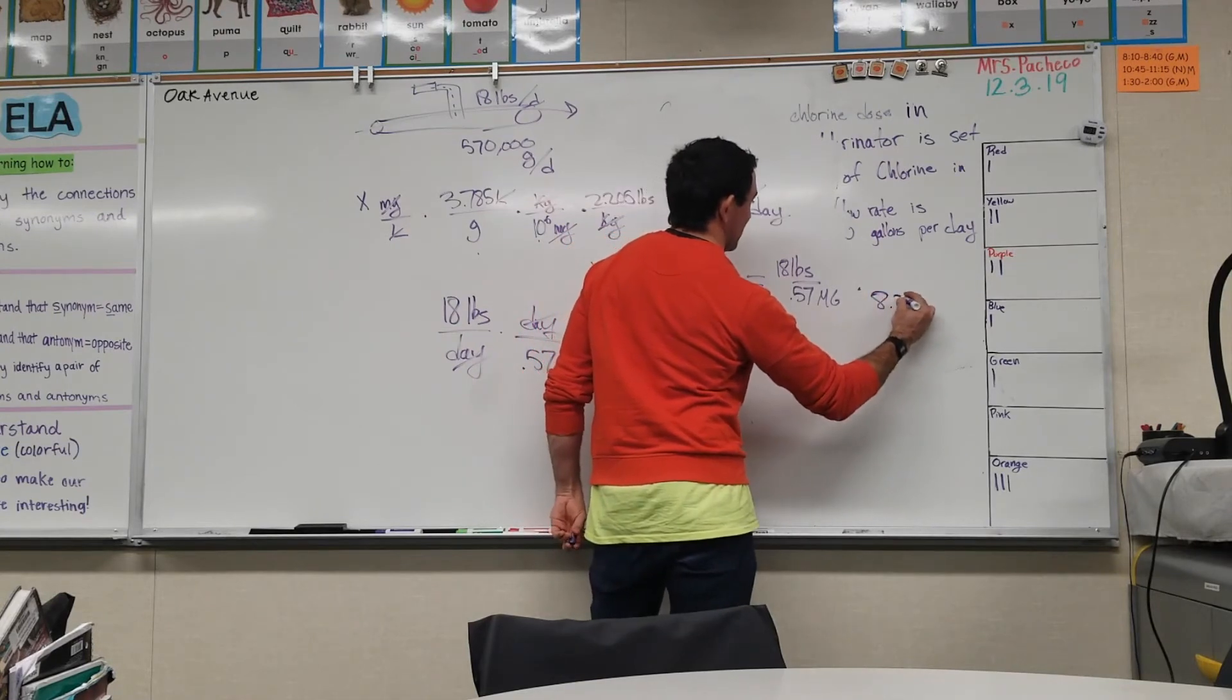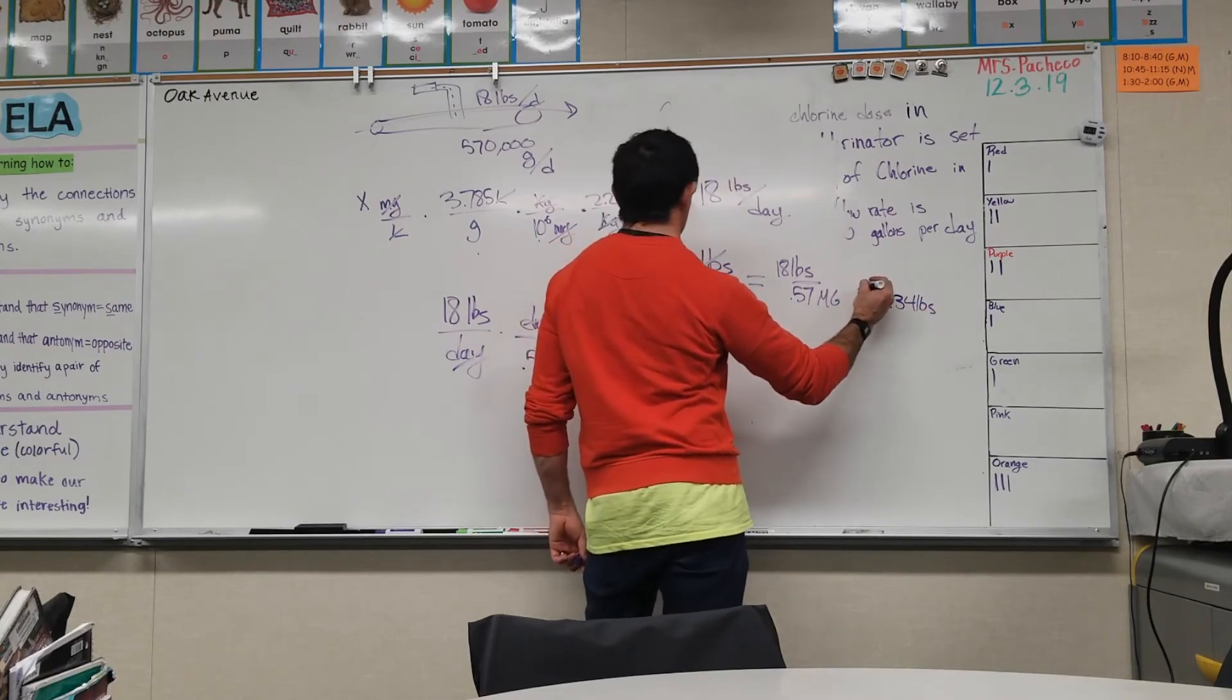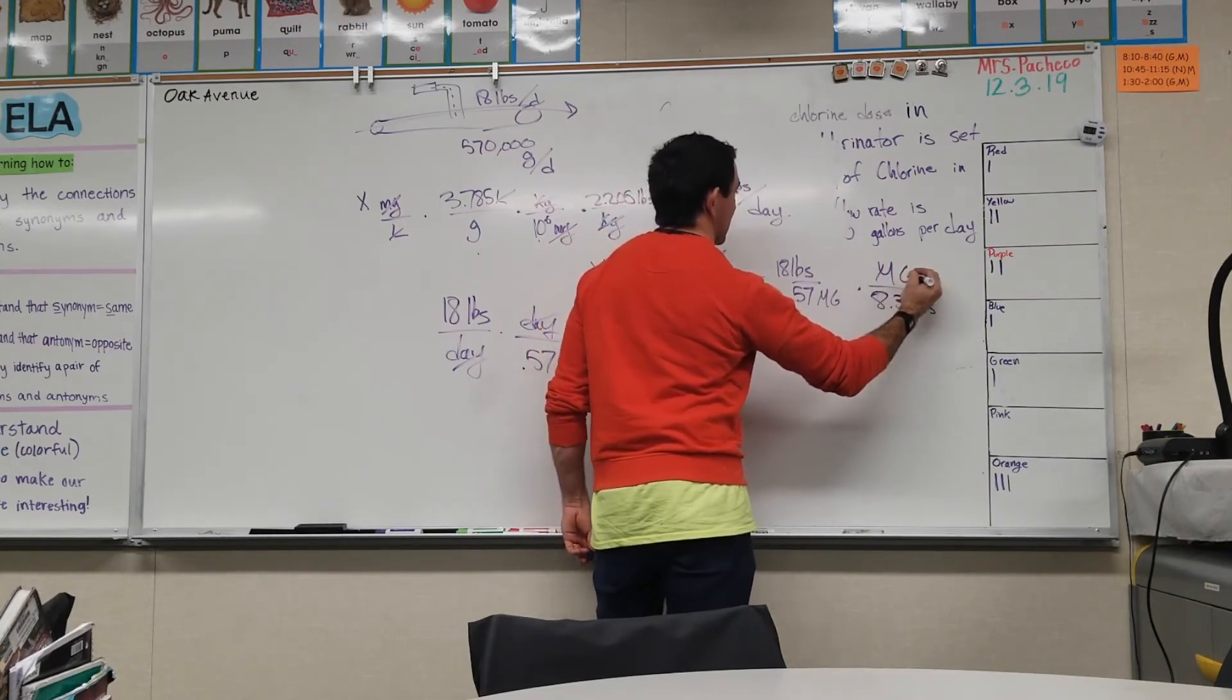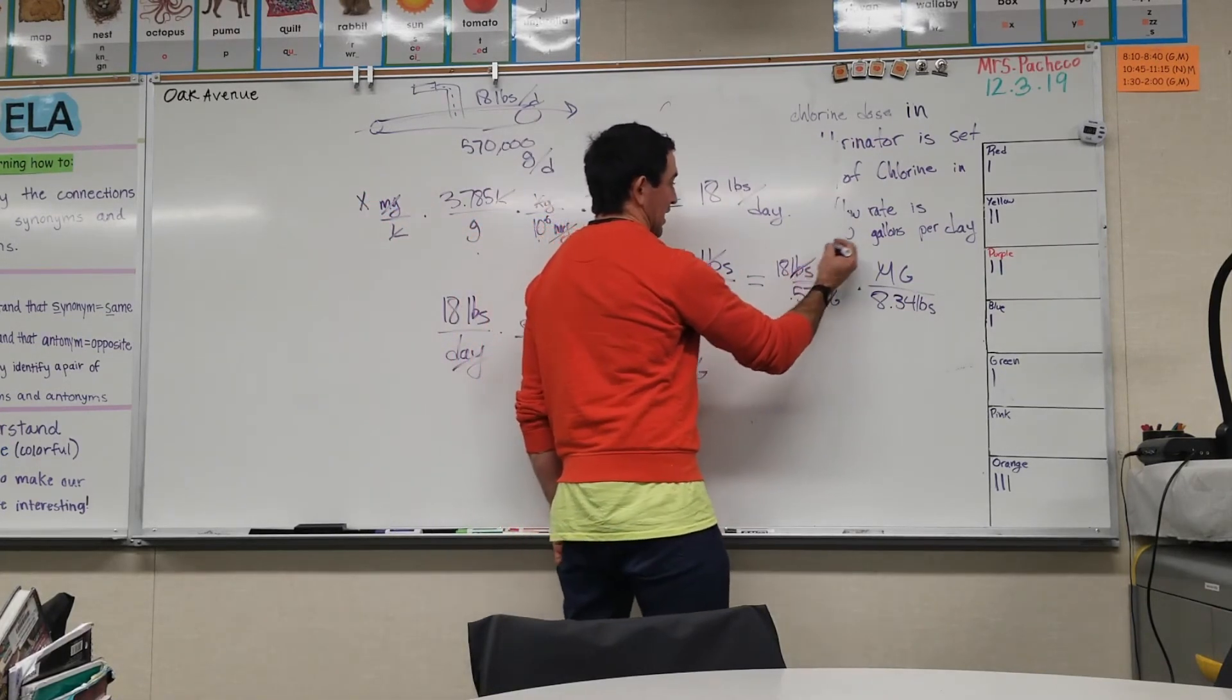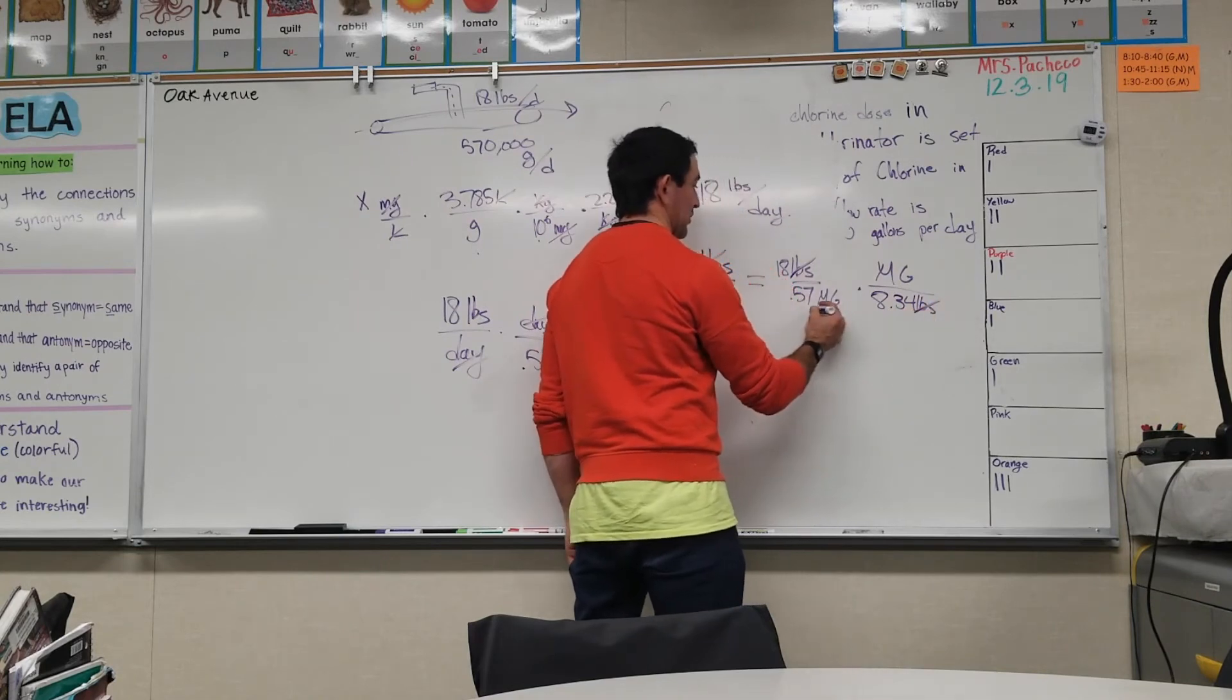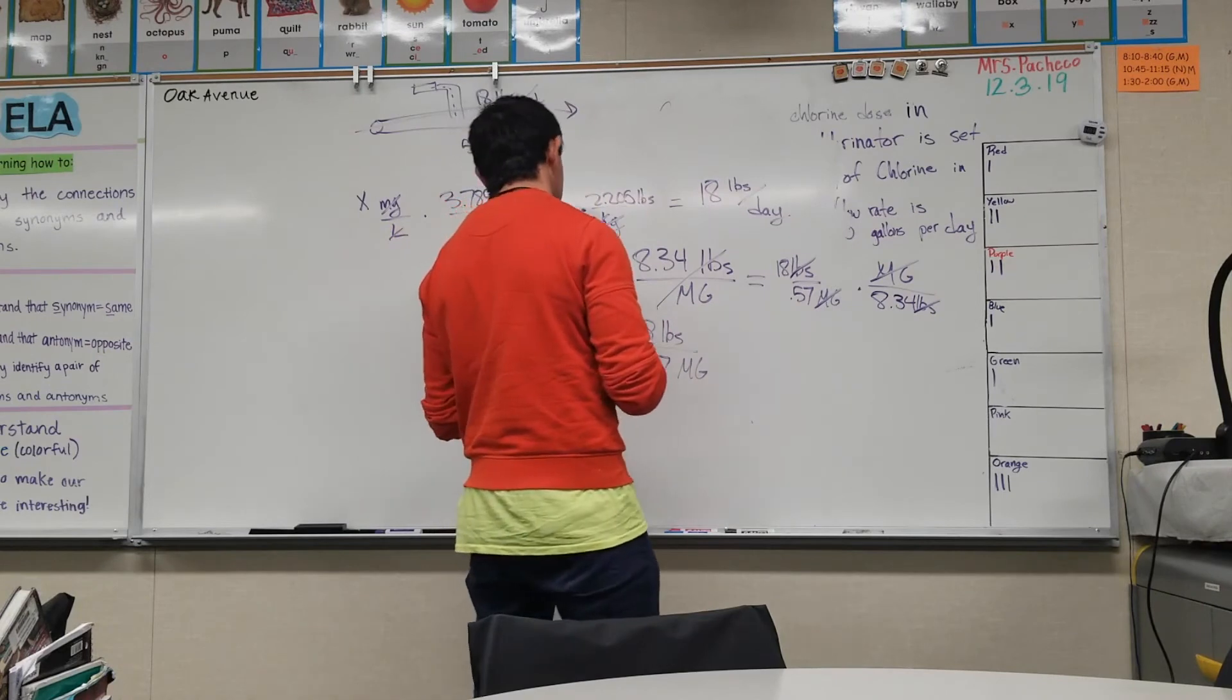On its head, 8.34 pounds underneath a million gallons. Pounds go away and million gallons go away, and you're left with just a clean digit. That digit is going to be - I just wanted to clarify that you get that clean digit I'm referring to when you divide that 18 that's on top by the 0.57 times 8.34 that's on the bottom.